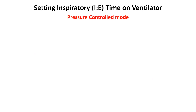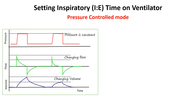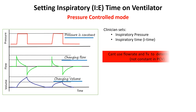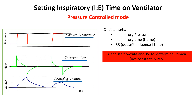Pressure control ventilation is a mode of mechanical ventilation where the ventilator delivers breaths at a set pressure. The main goal is to ensure that the pressure remains constant during the inspiratory phase regardless of the volume of air delivered. To achieve this, the ventilator adjusts the flow of air to reach the set pressure. The clinician sets the pressure as well as the inspiratory time directly. Flow rate and tidal volume are not used to determine inspiratory time because they are not constant and would lead to inconsistent inspiratory times.